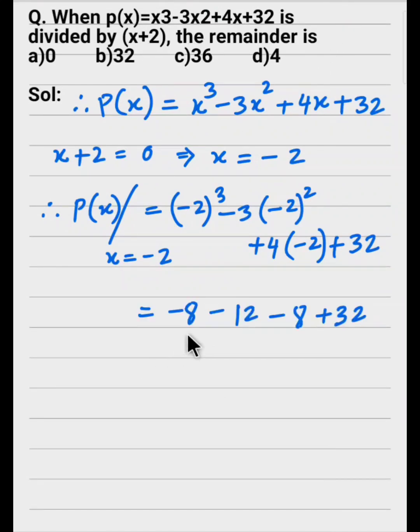Now see, minus 2³ that would be minus 8, and minus 2 times minus 2 that is plus 4, so that would be minus 12, then minus 8, then plus 32. It would become 8 plus 12 that is 20, 20 plus 8 is 28. So 32 minus 28 that would be 4. The remainder is 4.